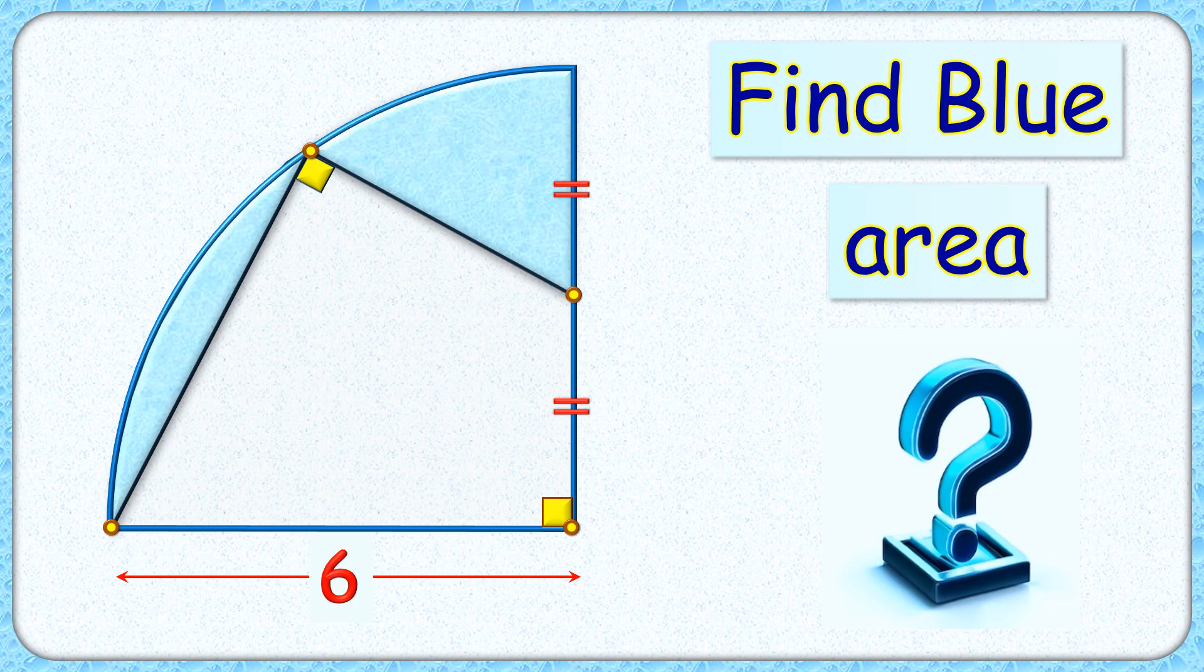Welcome everyone. This interesting question is about a quarter circle with radius 6 cm. A cutout is made in this quarter circle along these two lines which are mutually perpendicular to each other.